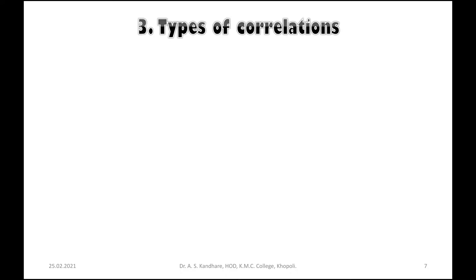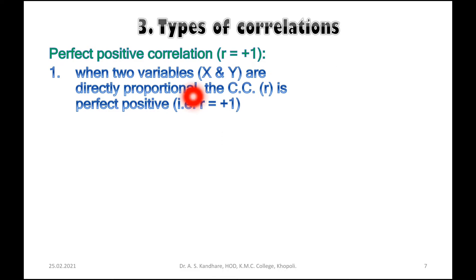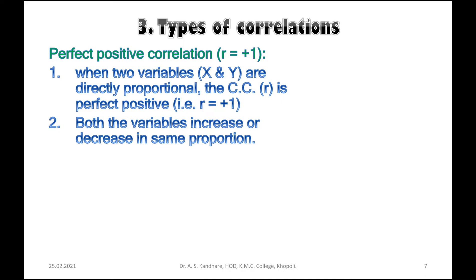The first type is perfect positive correlation, indicated as r is equal to plus one. When two variables x and y are directly proportional to each other, the coefficient of correlation is r equals plus one. Both variables increase or decrease in the same proportion.